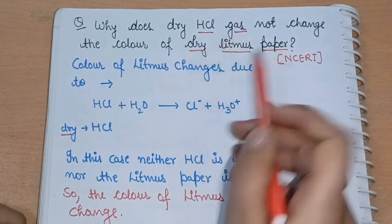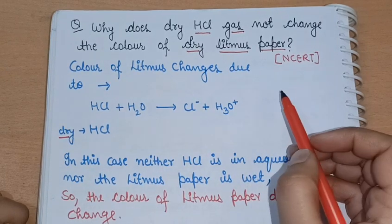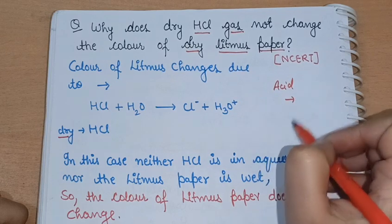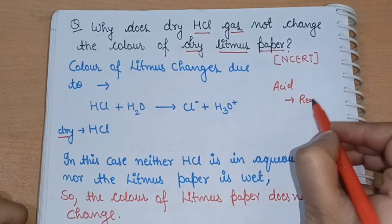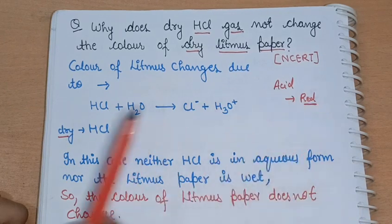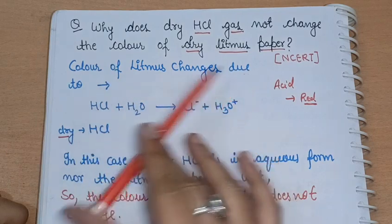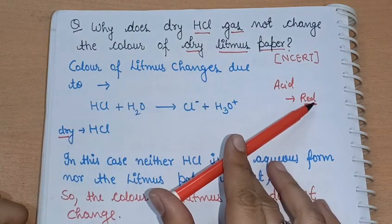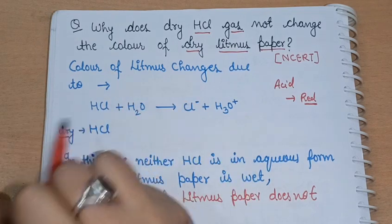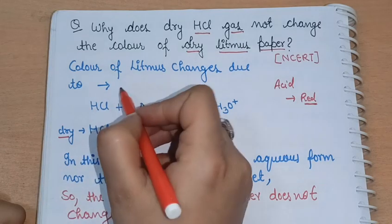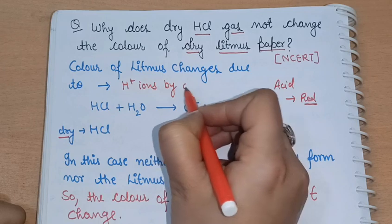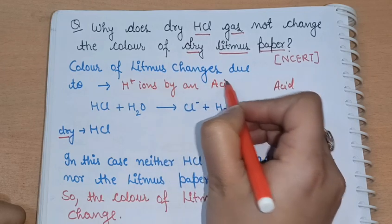You need to know about acids. The blue litmus paper turns red — by litmus paper we detect acids. The color of the litmus changes due to the presence of H⁺ ions given by an acid. So the color change is due to H⁺ ions given by an acid.